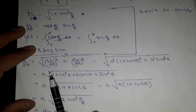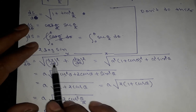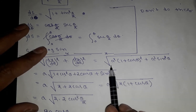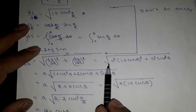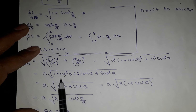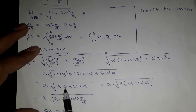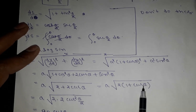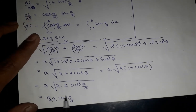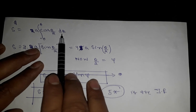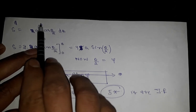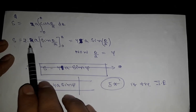We have dx/dθ, and we square it, then add (dy/dθ)² to get ds²/dθ². This gives a²(1 + cosθ)² + a²sin²θ. Expanding: a²(1 + 2cosθ + cos²θ + sin²θ) = a²(2 + 2cosθ) = 2a²(1 + cosθ). Using 1 + cosθ = 2cos²(θ/2), we get ds/dθ = 2a cosθ... continuing to simplify.